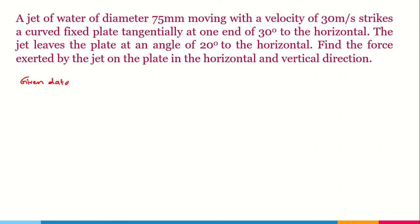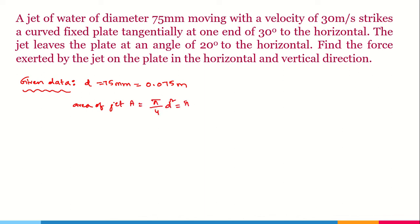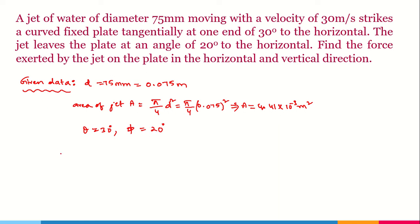Given data: diameter d = 75 mm = 0.075 m. Area of jet: A = (π/4) × d² = (π/4) × (0.075)² = 4.41 × 10⁻³ m². Velocity V = 30 m/s, θ = 30°, φ = 20°. We can now directly apply the formulas for FX and FY.